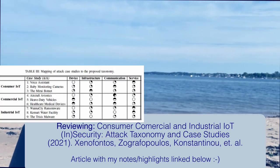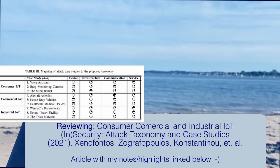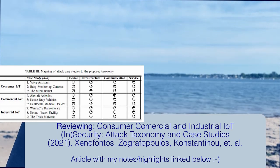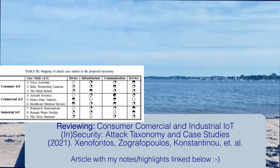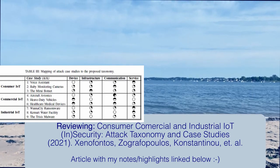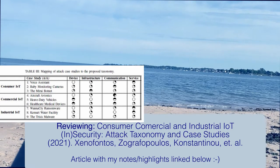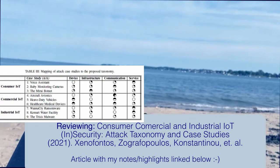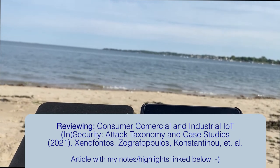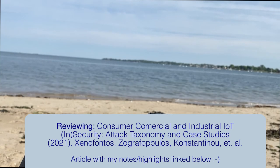They took all of these use cases and mapped each one according to the different subclasses — device, infrastructure, communication, and service — and did an interesting data visualization. I'll put it on screen. They have circles that indicate how much a subcategory is affected by a given use case, which lets you look across all the different pieces of an IoT threat and see the highest probability for each type. Real use cases backed by research papers that cite other research papers — this is a great machine learning training set for anyone who wants to try it out.